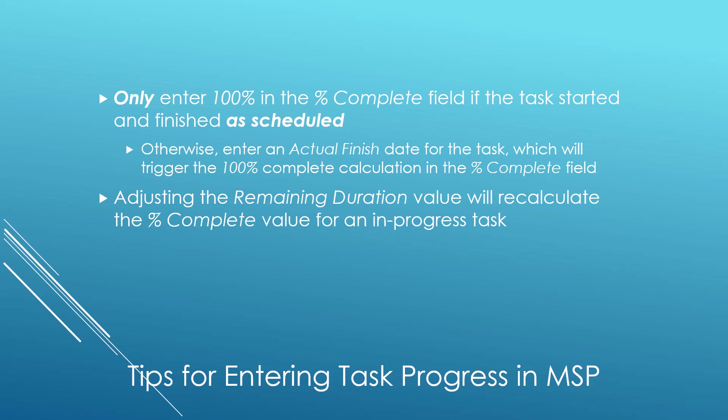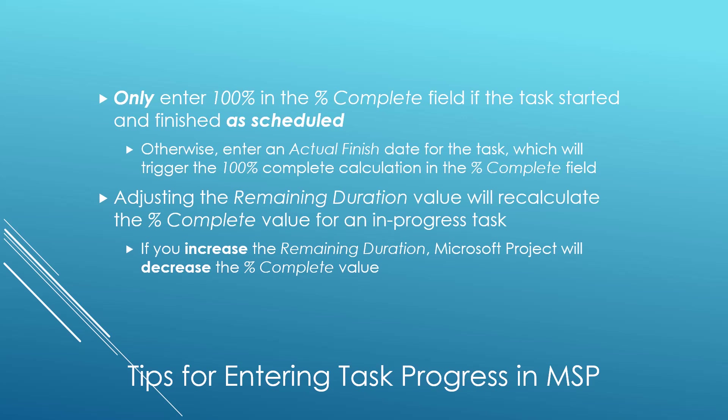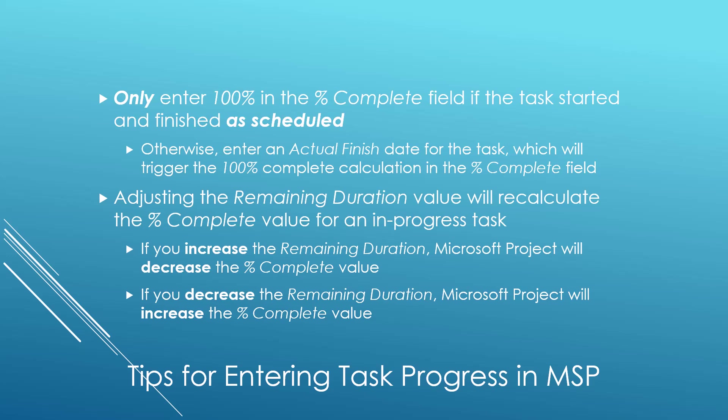Entering an actual finish date will trigger Microsoft Project to calculate a 100% value in the Percent Complete field for the task. Also keep in mind that adjusting the Remaining Duration value will recalculate the Percent Complete value for an in-progress task. If you increase the Remaining Duration value, Microsoft Project will decrease the Percent Complete value, and if you decrease it, Microsoft Project will increase the Percent Complete value. This is because of how Microsoft Project calculates percent complete as a percent of the duration completed on the task.